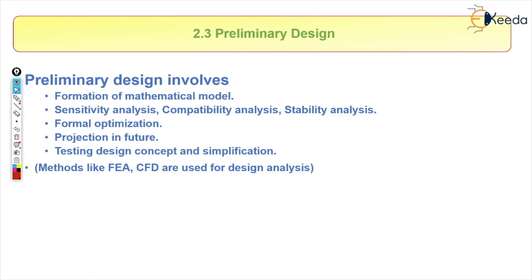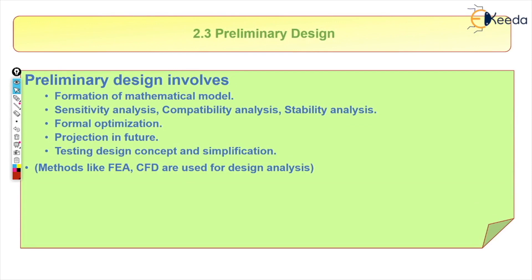Next we have preliminary design, which we have already covered in methodology, so we will cover it quickly. In preliminary design, we form a mathematical model, perform analysis, stability analysis, and optimization. Various software tools are available — such as CFD and FEA — through which we can analyze the design before manufacturing, making it much easier to determine whether the design is safe or not.